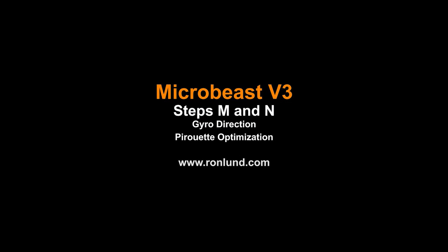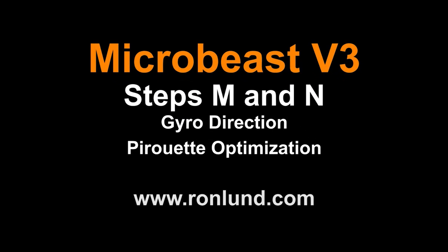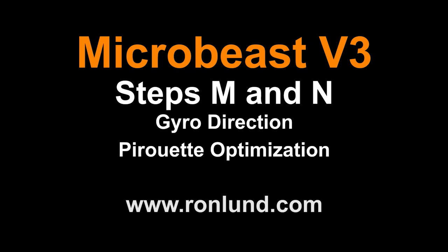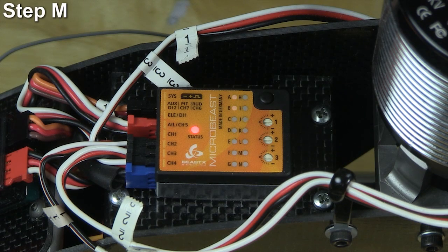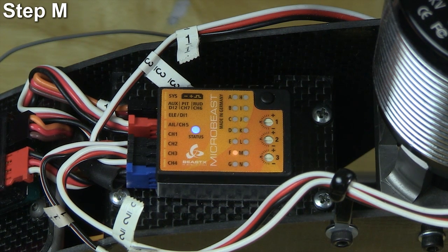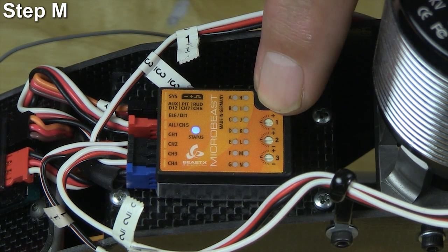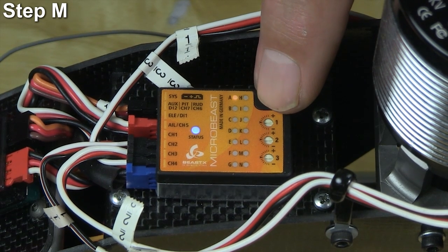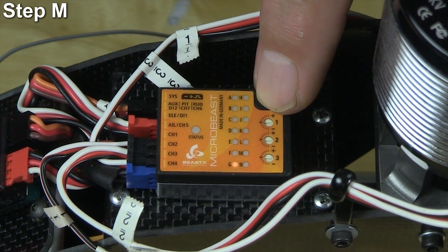Welcome back to Microbeast version 3 steps M and N. We're going to set the aileron elevator gyro direction and the pirouette optimization direction. Now go ahead and boot up your Microbeast. Hold down the button for a couple seconds to get the solid light. Step into step M.